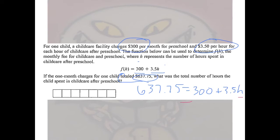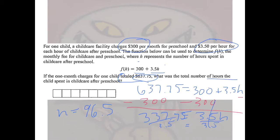We want to isolate the variable, so we do the opposite. When we do that, we have 3.5H is equal to 337.75. And of course, when we do that, last step, of course, we have to divide by 3.5. And then we get H is equal to 337.75 divided by 3.5 is 96.5. So that would mean the total number of hours the child spent in childcare after preschool was 96.5 hours. Just solving for variable. Not too bad.